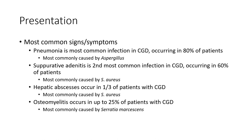Most common signs and symptoms: Pneumonia is the most common infection in chronic granulomatous disease, occurring in 80% of patients. Most commonly caused by Aspergillus.